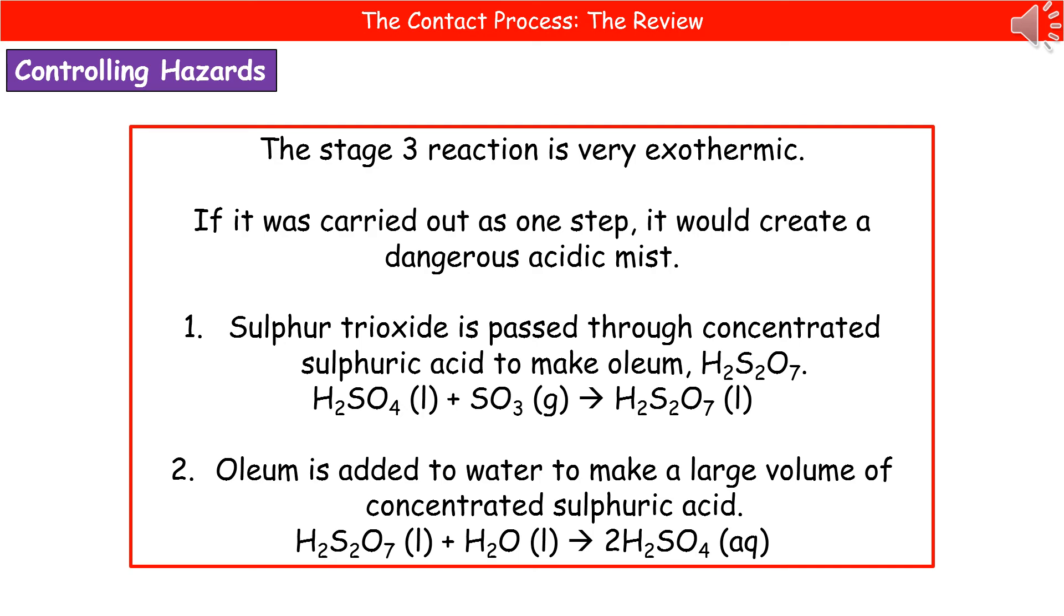Firstly, we take our sulfur trioxide and pass it through concentrated sulfuric acid to make a chemical called oleum, H2S2O7. Then we take the oleum and add water to that, and we make a large volume of concentrated sulfuric acid, 2H2SO4. Make sure you remember that stage 3 is actually split up into path A and B. Sulfur trioxide passed through concentrated sulfuric acid to make the oleum, and then the oleum added to water to make the concentrated sulfuric acid.